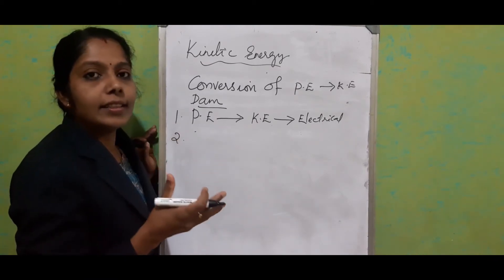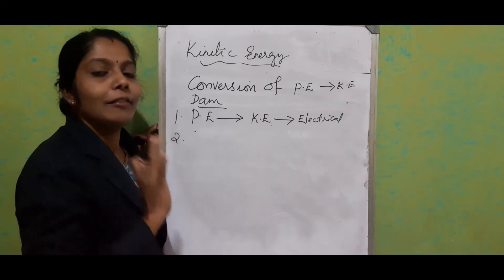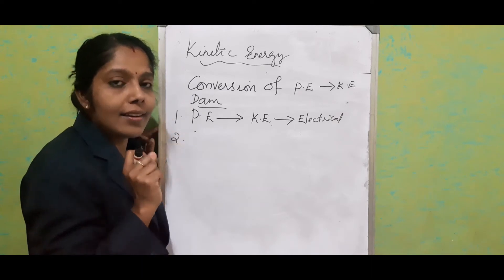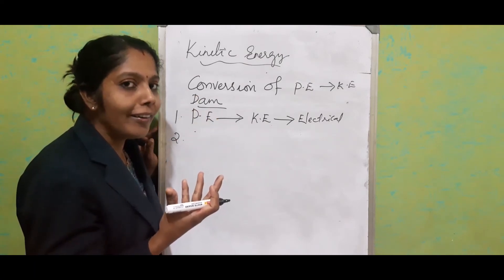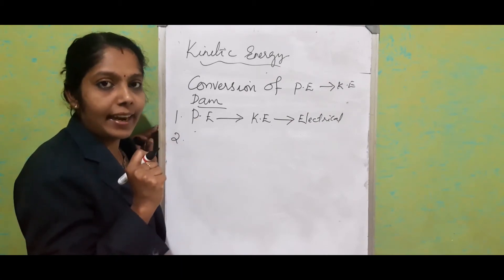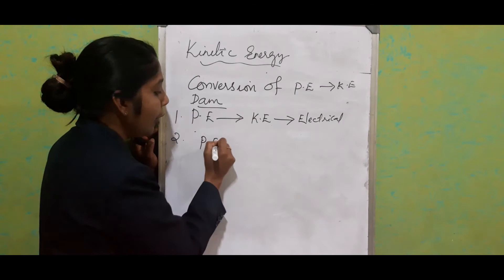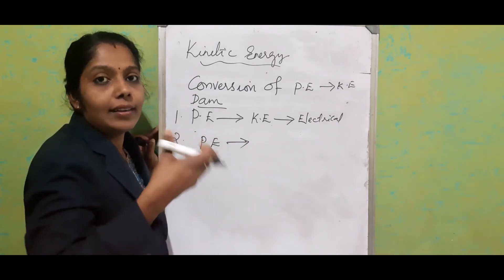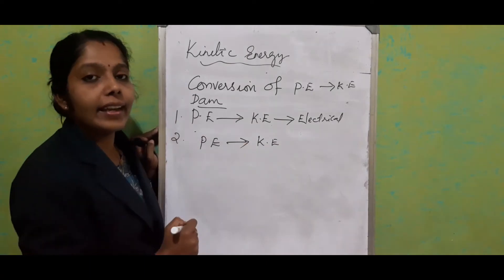Second example: consider a mechanical alarm clock. To set the alarm, we wind the key. When we wind the spring inside, it stores energy — specifically elastic potential energy. When the alarm starts ringing, the winding gets loose and the spring moves, converting that elastic potential energy into kinetic energy, which makes the alarm ring.